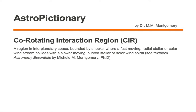A co-rotating interaction region, or CIR — C-I-R for short — is a region in interplanetary space bounded by shocks where a fast-moving radial stellar or solar wind stream collides with a slower-moving curved stellar or solar wind spiral.